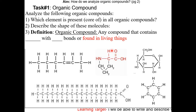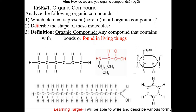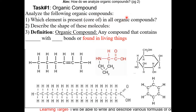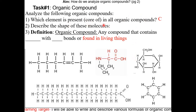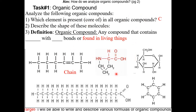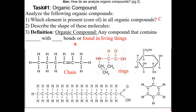Let's first define and describe what an organic compound is. Here are some examples of organic compounds. Which element is present or core in all organic compounds? It is carbon. Describe the shape of these molecules — some of these are chains and some are rings. For the definition: an organic compound is any compound that contains carbon with C-H bonds, or found in living things.